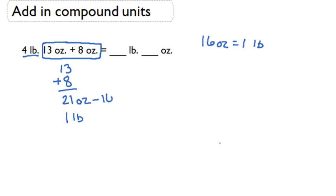And then we're going to subtract that 16 that we just took out to become a pound, and find that there's also 5 ounces. So 21 ounces, the answer to 13 ounces plus 8 ounces, is equal to 1 pound and 5 ounces.